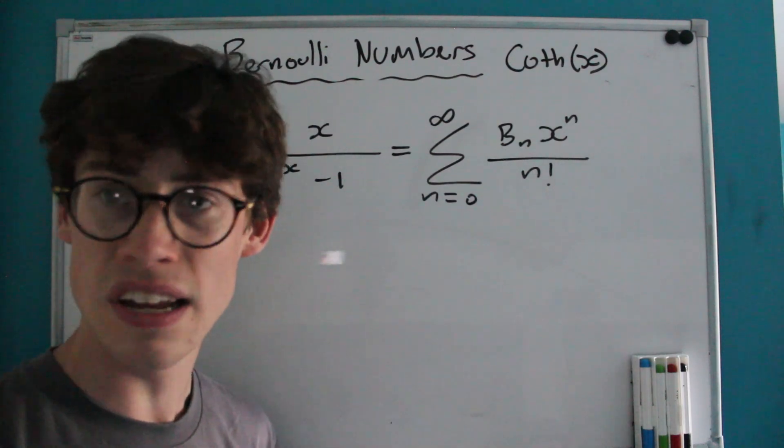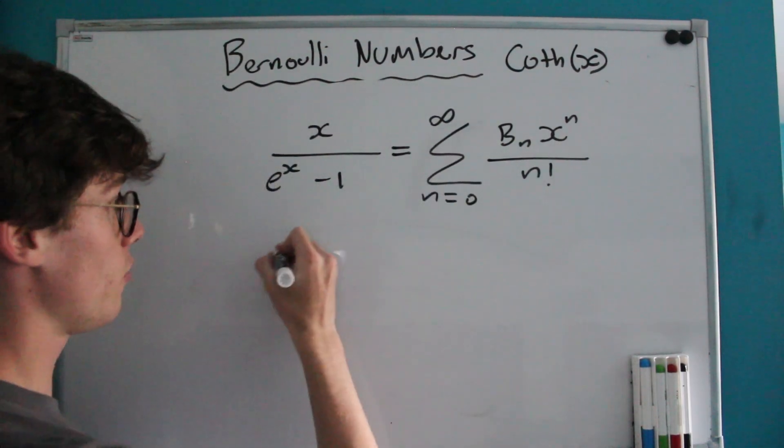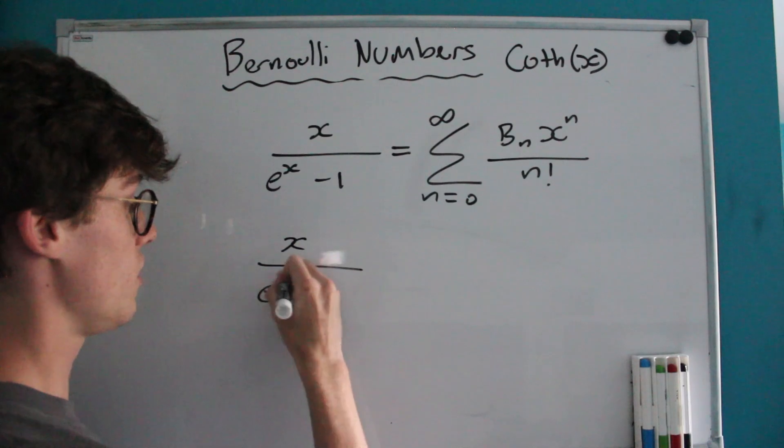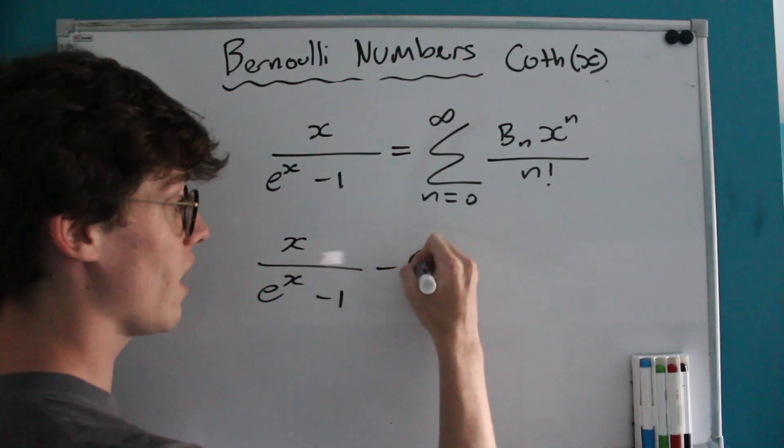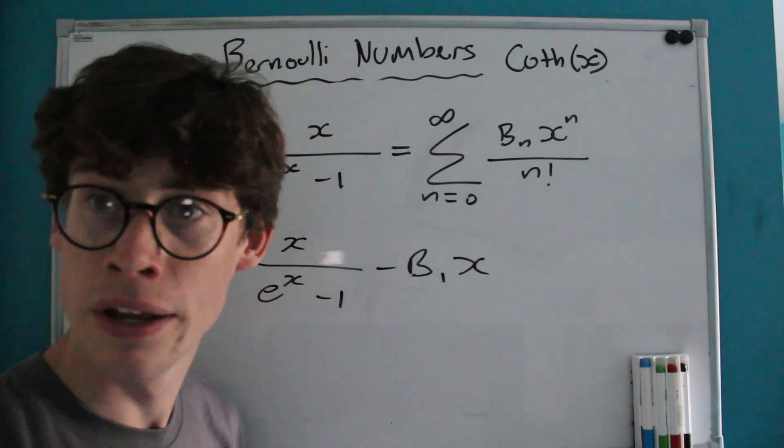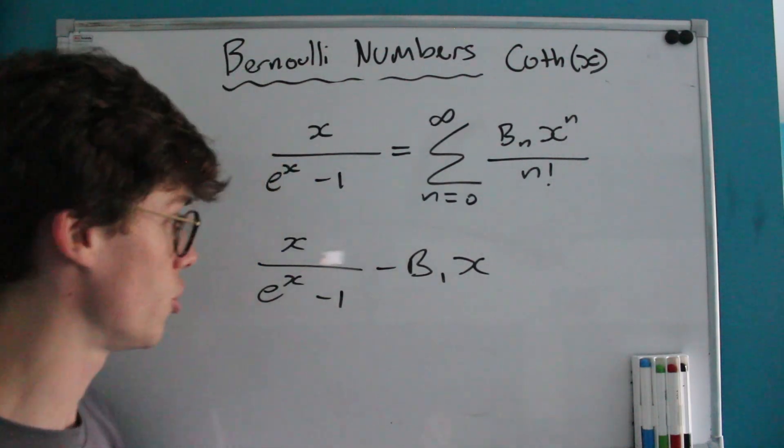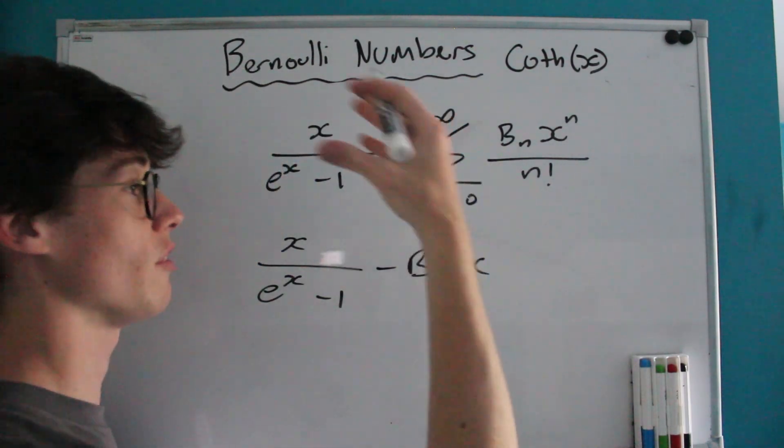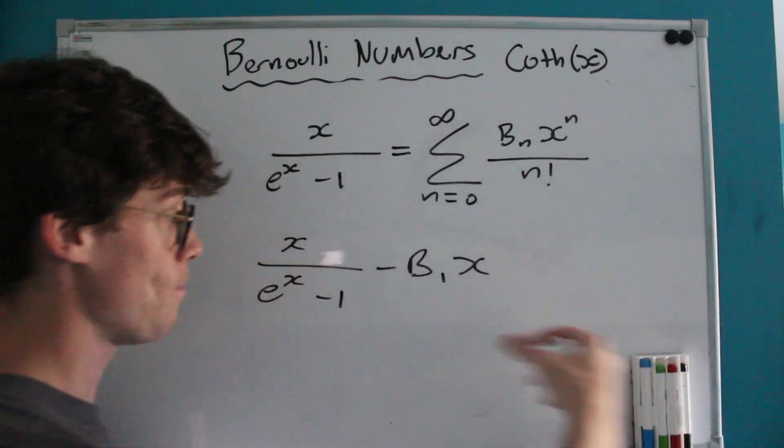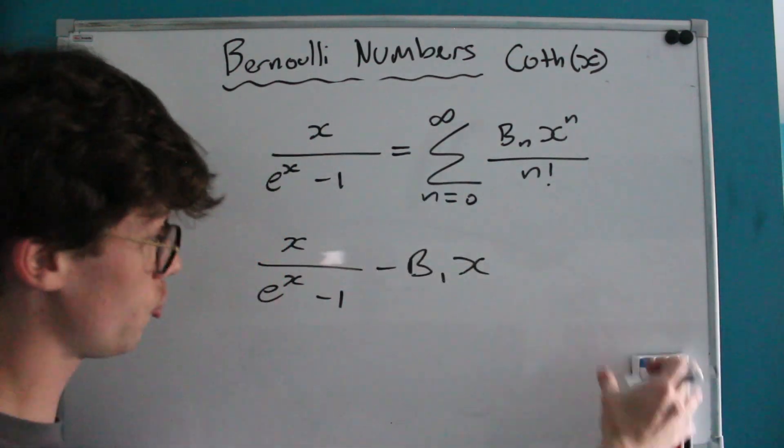Because all of the other odd ends are going to be 0, if we take this series and subtract out that value of X where n equals 1, we must be left with an even function. We must be left with a McLaren series where n is only even.